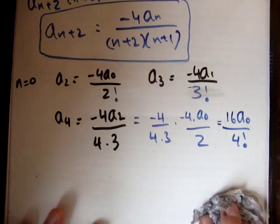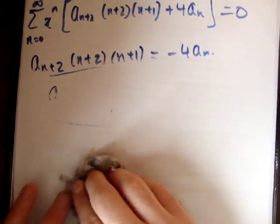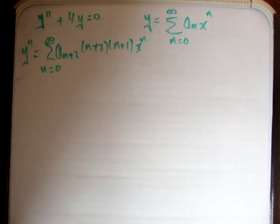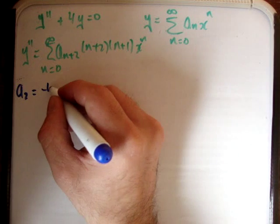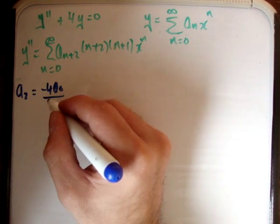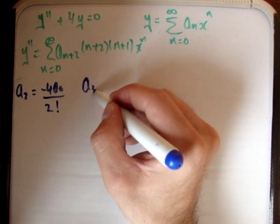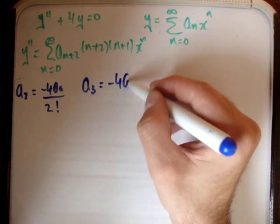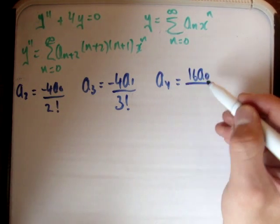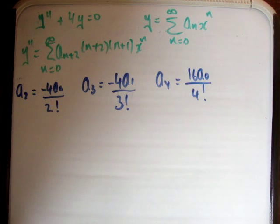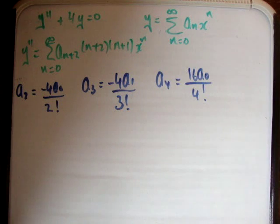So what we found is: a_2 equals negative 4 a_0 over 2 factorial, a_3 equals negative 4 a_1 over 3 factorial, and a_4 equals 16 a_0 over 4 factorial. Now we know all the a_n constants, so let's see what the power series looks like.